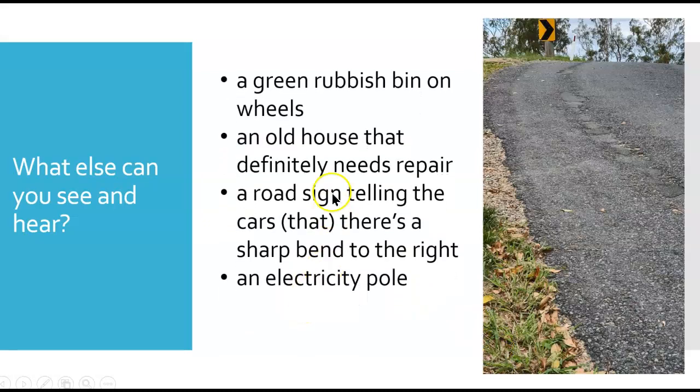All right, did you hear them? The first one was a green rubbish bin on wheels. The second one was an old house that definitely needs repair. Number three, a road sign telling the cars that there's a sharp bend to the right. And finally, we have an electricity pole.